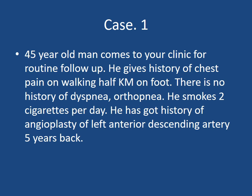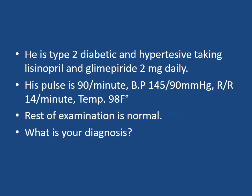Case 1: A 45-year-old man comes to your clinic for routine follow-up. He gives a history of chest pain on walking half a kilometer on foot. There is no history of dyspnea or orthopnea. He smokes two cigarettes per day and has a history of angioplasty of the left anterior descending artery five years back. He is type 2 diabetic and hypertensive, taking lisinopril and glimepiride 2mg daily. His pulse is 90 per minute, blood pressure 145/90 mmHg, respiratory rate 14 per minute, and temperature is normal. The rest of the physical examination is normal. What is your diagnosis on the basis of history and examination?